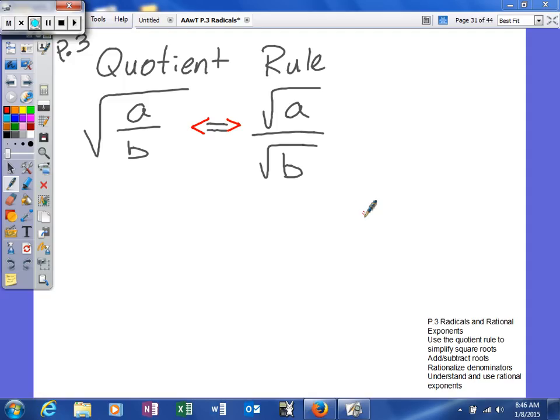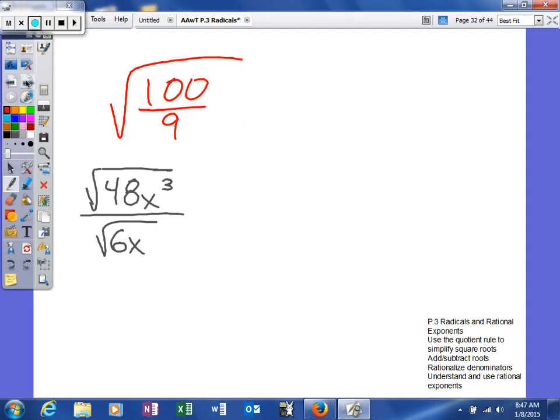Well, the quotient rule is very similar. If you have the square root of A over B, you can really write that as the square root of A over the square root of B. And vice versa, just like the product rule goes both ways, because if you have the square root of A over the square root of B, you can write that as one radical. So kind of keep that in mind as we look at a couple examples.